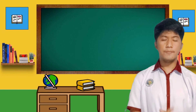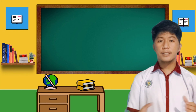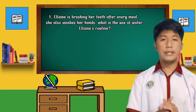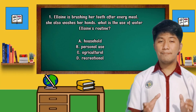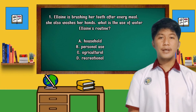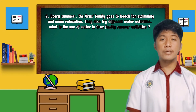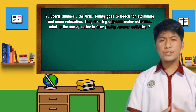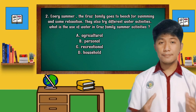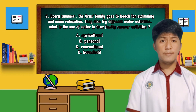Now, let's have an activity. Explain the use of water by reading each situation and choose the letter of the correct answer. The first item: Elaine is brushing her teeth after a meal and also washes her hands. What is the use of water in doing Elaine's routine? A. Household, B. Personal use, C. Agricultural, D. Recreational. If your answer is letter B, you are correct. The next question: Every summer, the Cruz family goes to the beach for swimming and summer relaxation. They also try different water activities. What is the use of water for the Cruz family? A. Agricultural, B. Personal, C. Recreational, D. Household. If your answer is letter C, nice job!